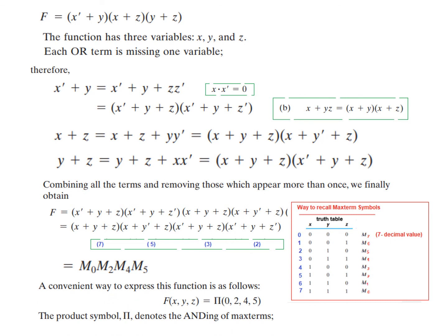So the convenient way of expressing this also is that we write function of x, y, z. And then we use the symbol capital Pi to denote the ANDing function. So product of 0, 2, 4, and 5. Product of 0, 2, 4, and 5. So I hope this gives you some kind of an understanding as to how to solve this type of a problem. Thank you.